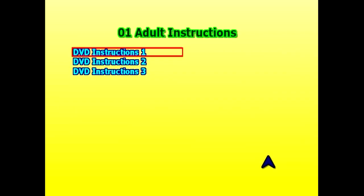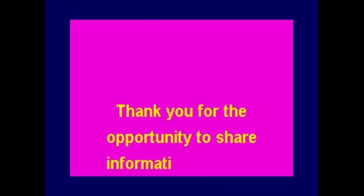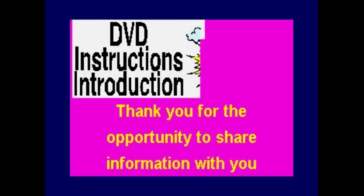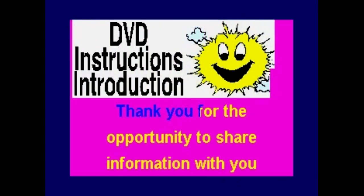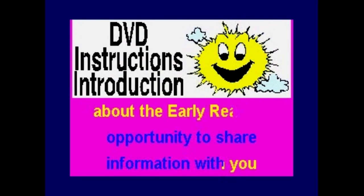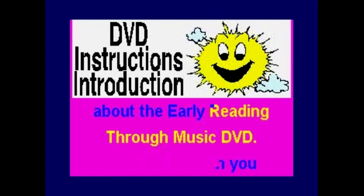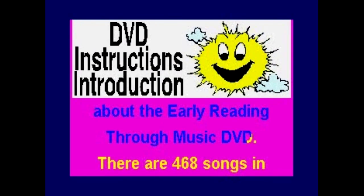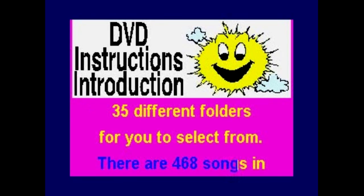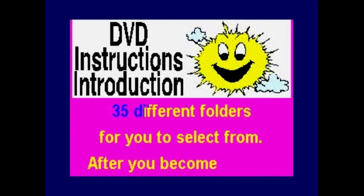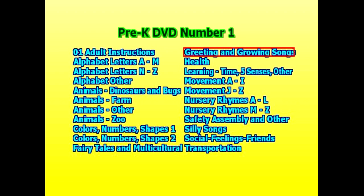You click on that folder and these three DVD instructions come up. All you have to do is click on one of them and it will begin to play. I'll play it a little bit for you just so you get an idea. 'Thank you for the opportunity to share information with you about the Early Reading Through Music DVD. There are 468 songs in 35 different folders.' Then you hit your menu button to go back to the main menu.